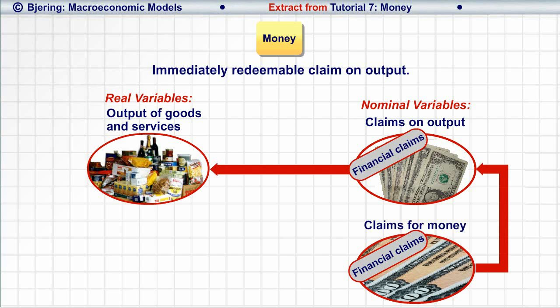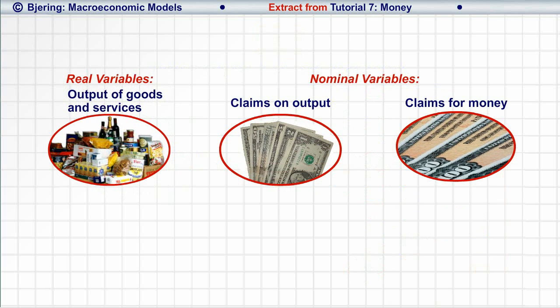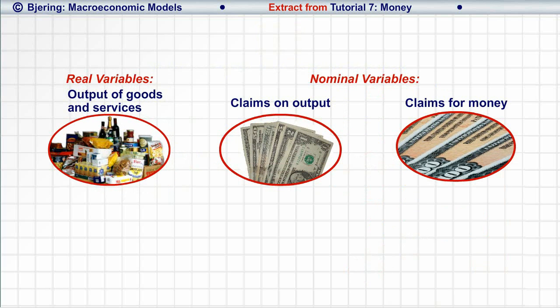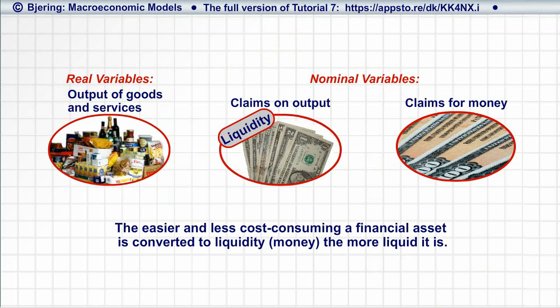Nominal variables are very different from the real, tangible variables. Because money easily transforms into tangibles, we say that money is very liquid, or simply, that money is liquidity. And the easier and less cost-consuming it is to redeem other financial assets with money, the more liquid they are.